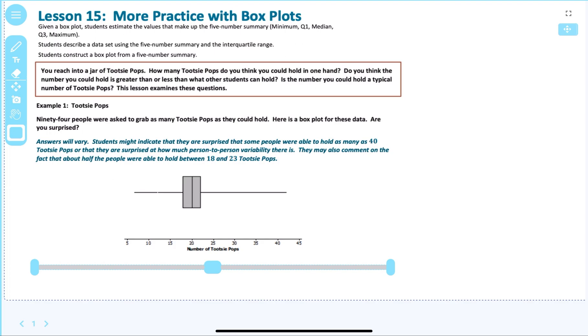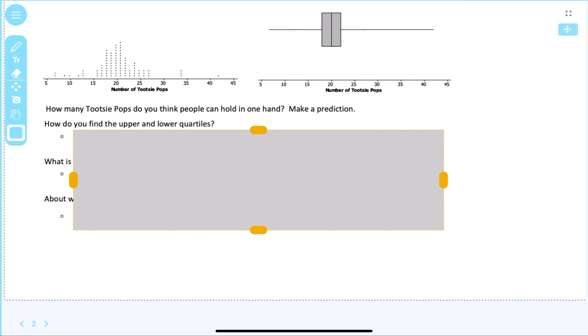Students might indicate that they are surprised that some people were able to hold as many as 40. Here would be those that could hold 40. And others might be surprised at how much person-to-person variability is, going from 5 or 7 to 42, that's a big variability. They also may comment on the fact that about half the people are able to hold between 18 and 23 Tootsie Pops. So that's just looking at the box plot. How many Tootsie Pops do you think you can hold in one hand? Based on this, I would think I could probably hold around 21.